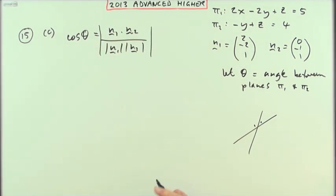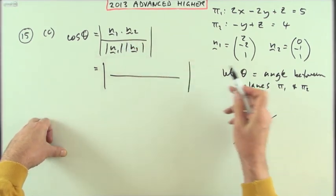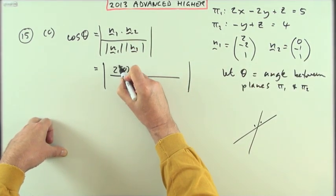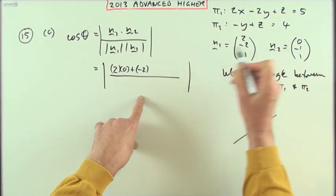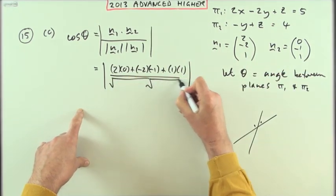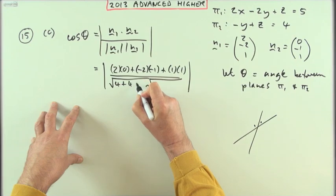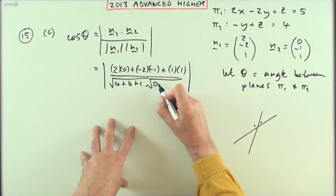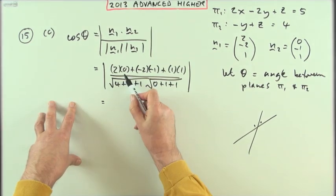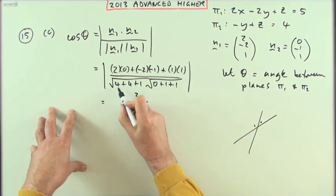To guarantee that you're always picking out the acute one, a simple thing to do is take the absolute value. So the scalar product: that'll be two times zero, negative two times negative one for the y components, and one times one for the z components, over the square roots of—I'll just square them as I go—four and four and one, I know that's nine, that's three. And nothing and one and one.